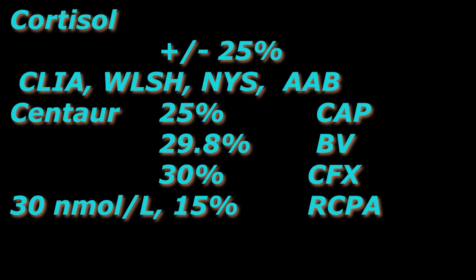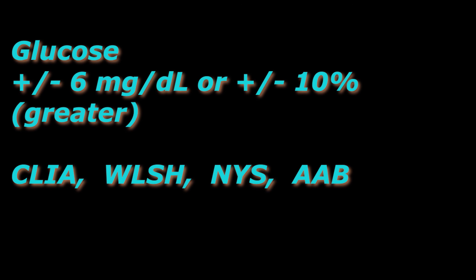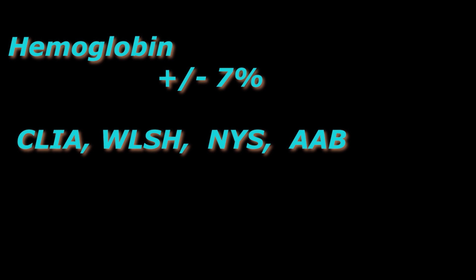For example, for glucose 6 milligrams per deciliter, for hemoglobin it is plus or minus 7%. I have given the website for the total allowable error list given by the international board.